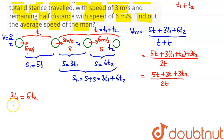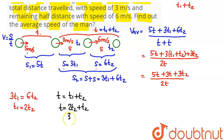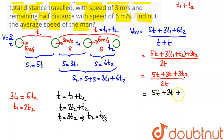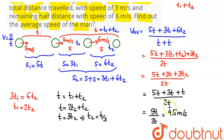From 3T1 = 6T2, we get T1 = 2T2. Since T = T1 + T2, substituting T1 = 2T2 gives 2T2 + T2 = T, so 3T2 = T, meaning T2 = T/3. Substituting back, 3T2 = T, so the numerator becomes 5T + 3T + T = 9T. Average speed = 9T divided by 2T = 4.5 meters per second. The final average speed of the man is 4.5 m/s.